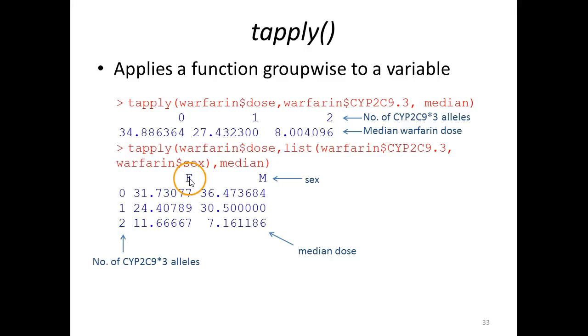In return, we get a matrix with one column for each sex and one row for each level of the CYP2C9 dot 3 variable. So in the group females with zero alleles, you have a median dose of 31.7, and in the group males with two alleles, for example, you have a median of 7.16.